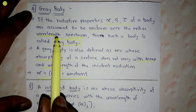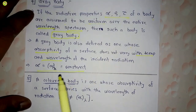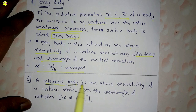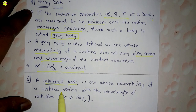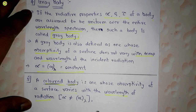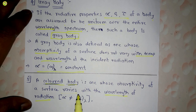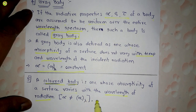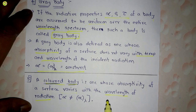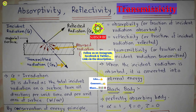A colored body is one whose absorptivity varies with the wavelength of radiation. Mathematically, α ≠ α_λ — that is, absorptivity is not equal to absorptivity at a given wavelength.